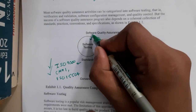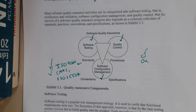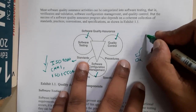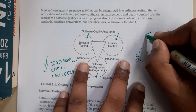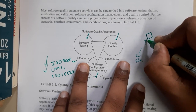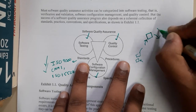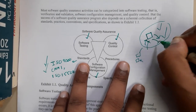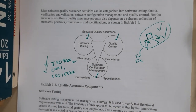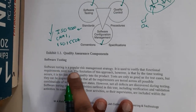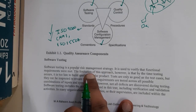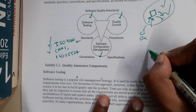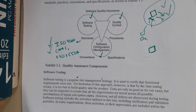So let us start now with software testing. Basically, software testing is where you take the software, give some inputs, and expect the correct output. This concept of testing with known inputs and known outputs is called software testing. The main goal is that software testing is a popular risk management strategy.